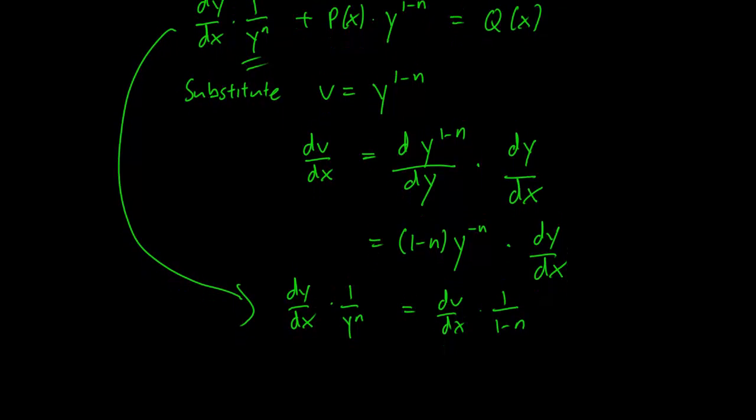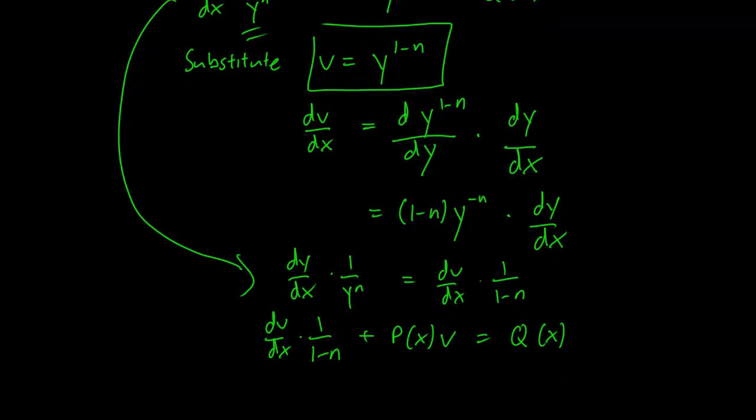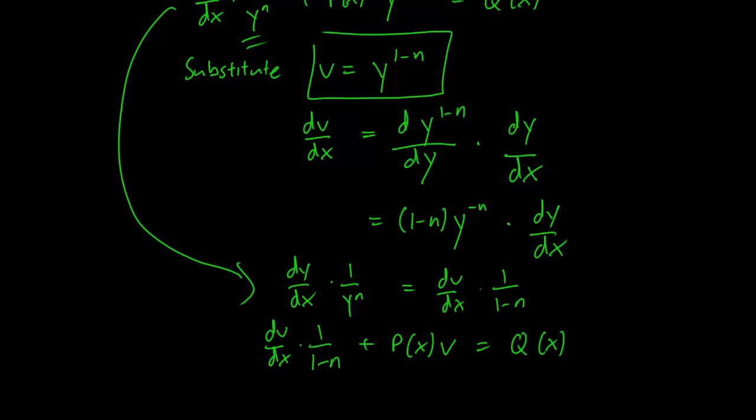And what we have in the end is just going to be dv/dx times 1 over 1 minus n plus p(x) times v because of this substitution equals Q(x), which is going to be a much simpler differential equation to solve.